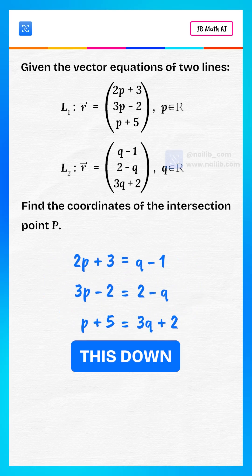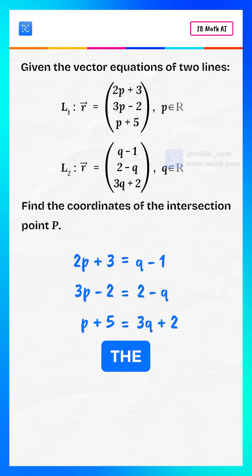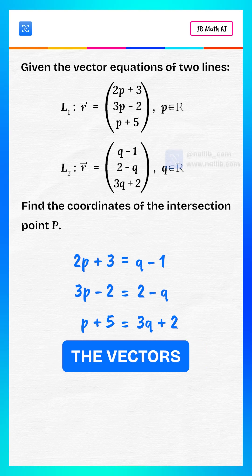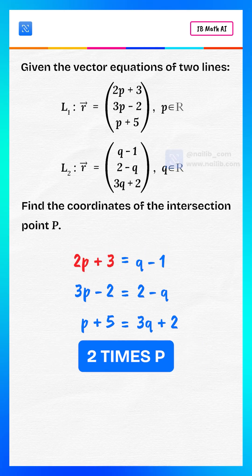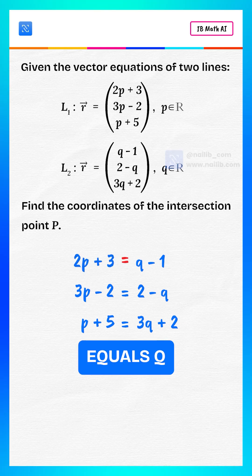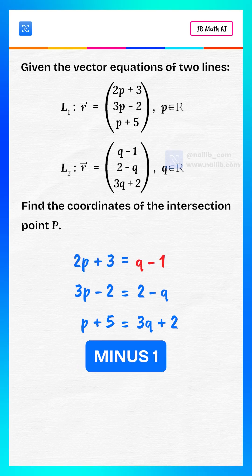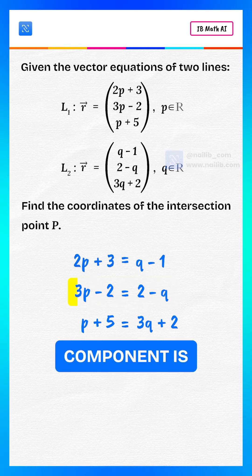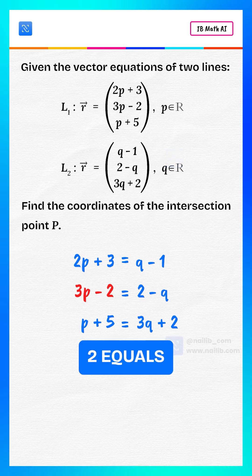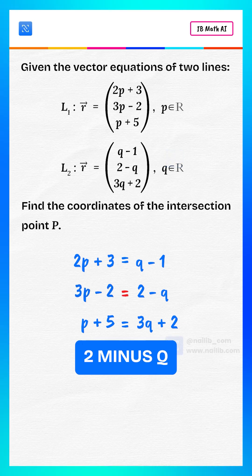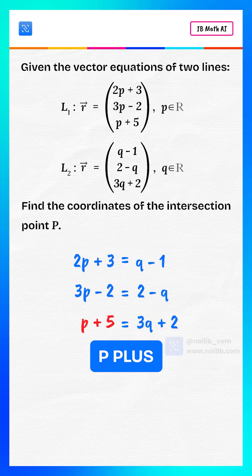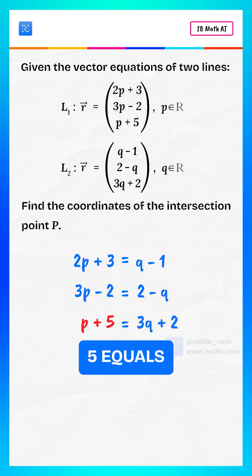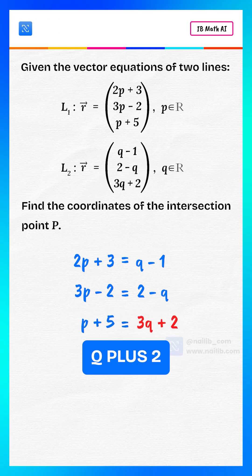Now let's break this down into three separate equations by equating the corresponding components of the vectors. The first component is 2P + 3 = Q − 1. The second component is 3P − 2 = 2 − Q.